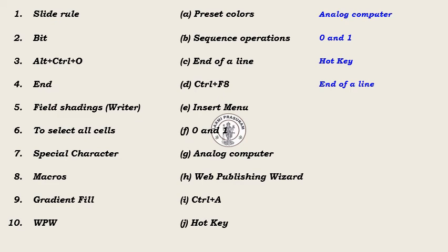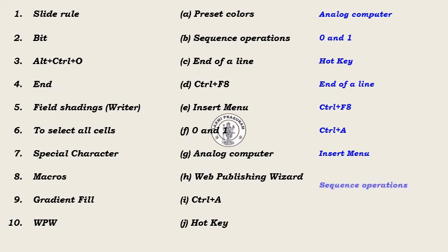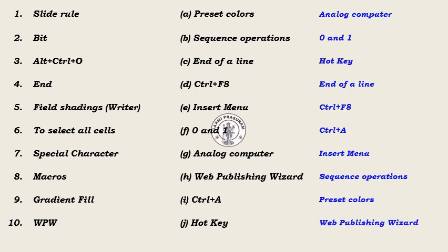Match the following answers continued. 6: Control + F8 — Field shadings. 7: To select all cells — Control + A. 8: Special character — Insert menu — Macros — Sequence operations. 9: Gradient fill — Preset colors. 10: WPW — Web publishing wizard. Next is choose the best answer.